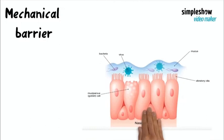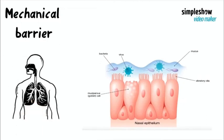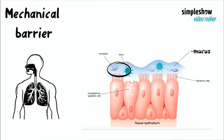An example of the mechanical barrier is the lining of the mucus membrane in the respiratory system that secretes mucus. Mucus contains many glycoproteins called mucins, which trap microorganisms and prevent them from attaching to our epithelial cells. Also in the respiratory system, there are hair-like structures called cilia that line the mucus membrane and move particles trapped in the mucus out of the nose.